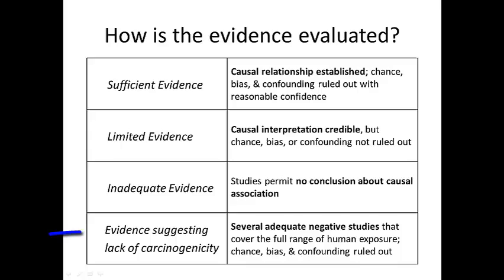There is a fourth category: evidence suggesting a lack of carcinogenicity. Of the 900 things that have been looked at by IARC, they simply don't fall here. Things that come to IARC generally have something that has scared people — either some positive epidemiologic studies, some positive animal studies, or other experimental evidence. So it's rare; we're not looking at many things that people would call benign. I would expect to see this category very rarely used.